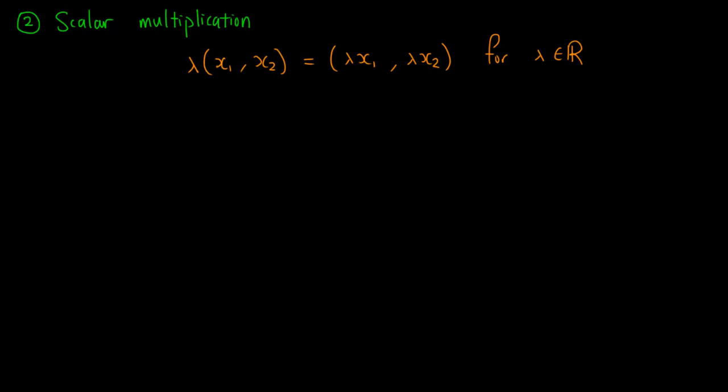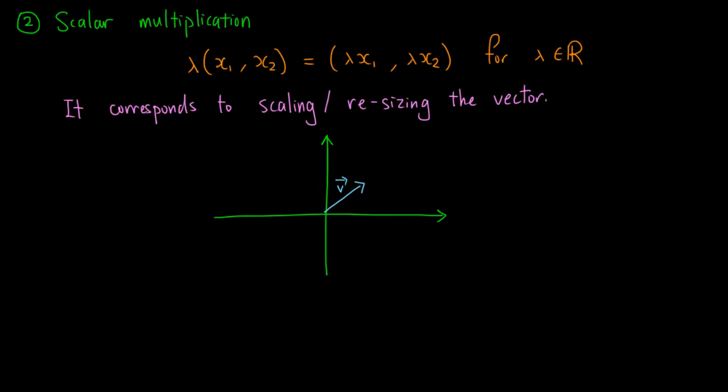To understand what this means geometrically, let's say I have a vector v drawn on the plane. Then, 2v is the same vector, except the length is doubled. Also, if I want to find a vector -½v, then it would be pointing in the opposite direction, but still parallel to the original vector v, then ½ means that I would have half the length of the original vector. We can see that scalar multiplication corresponds to scaling or resizing a vector. Hence, the number used for the scaling, in this case λ, is called a scalar.